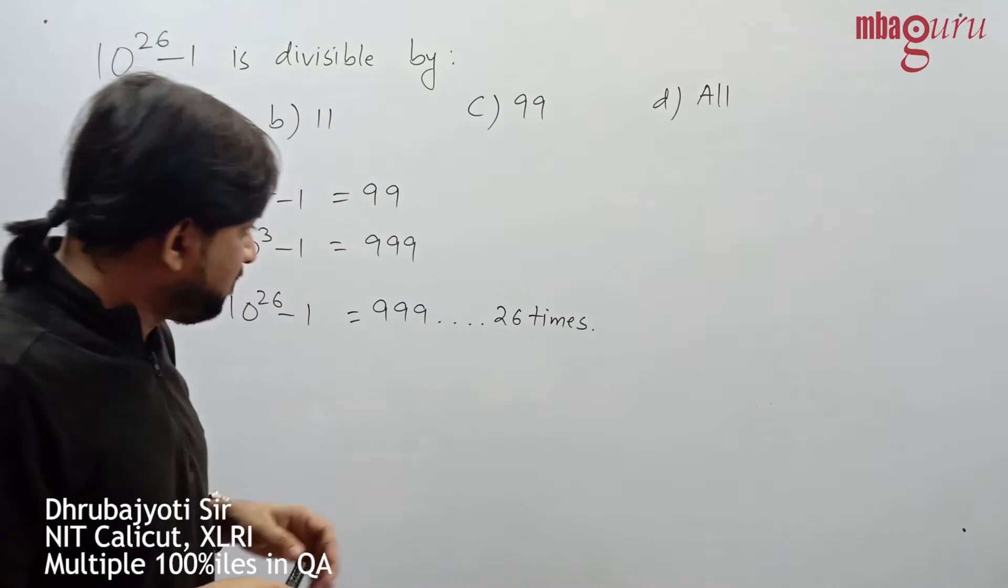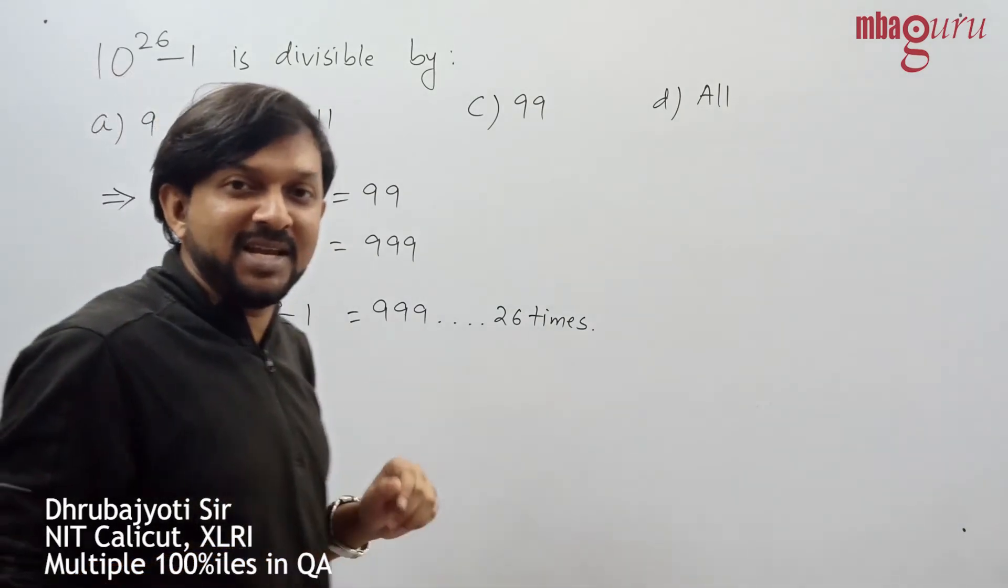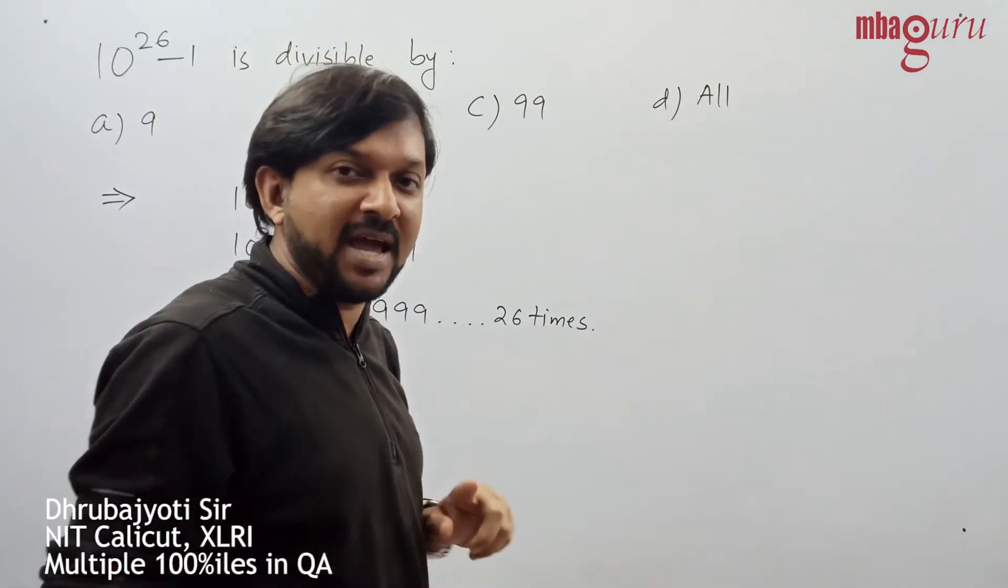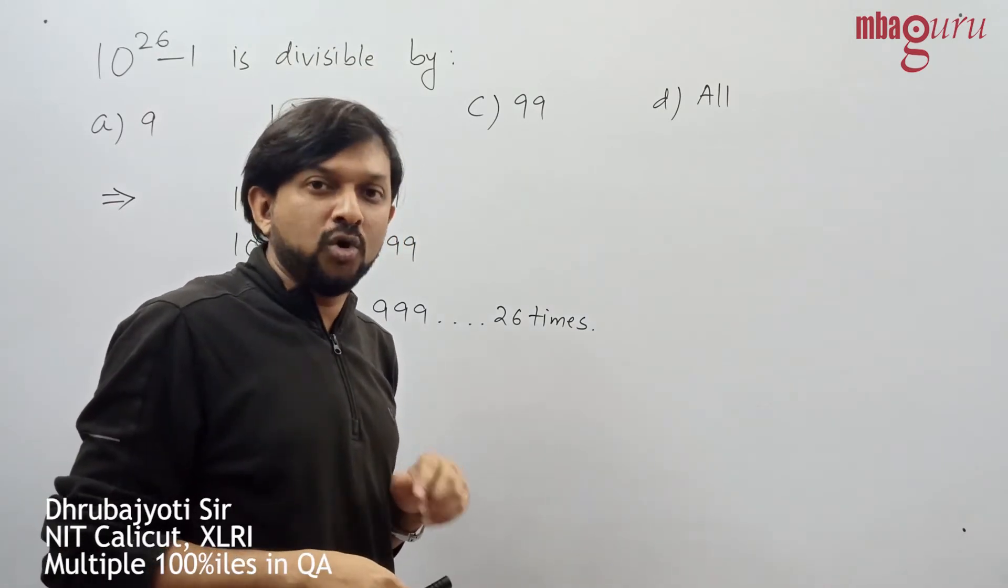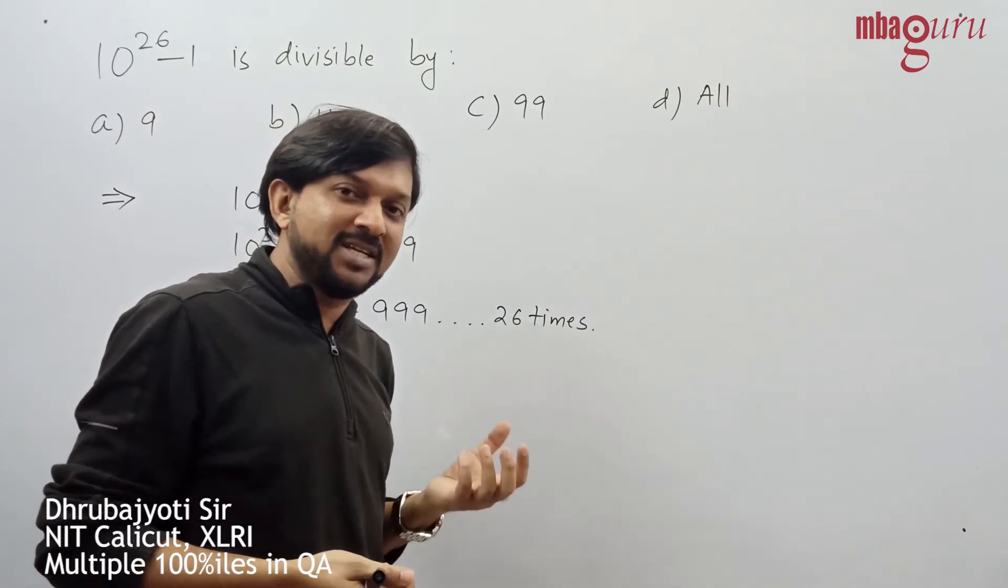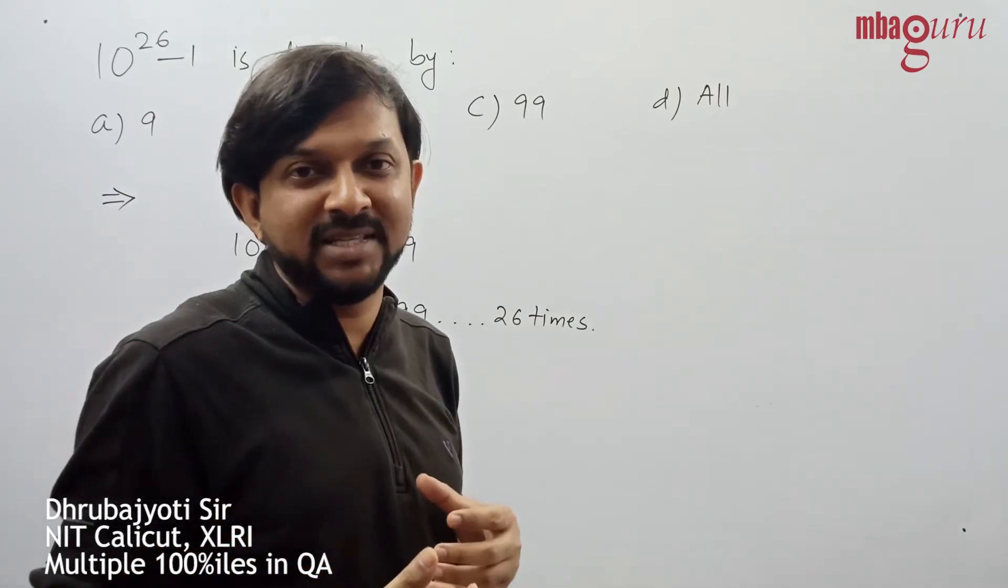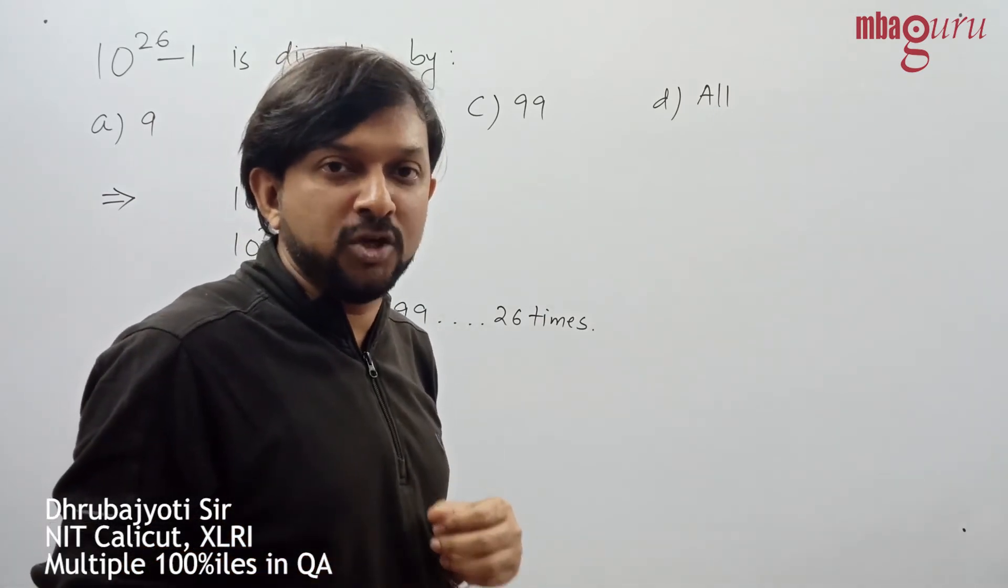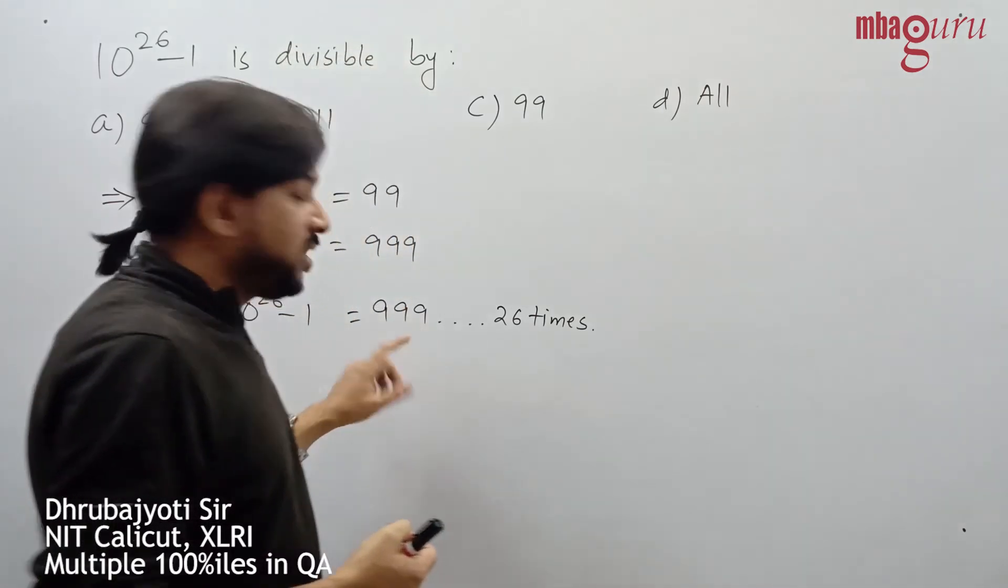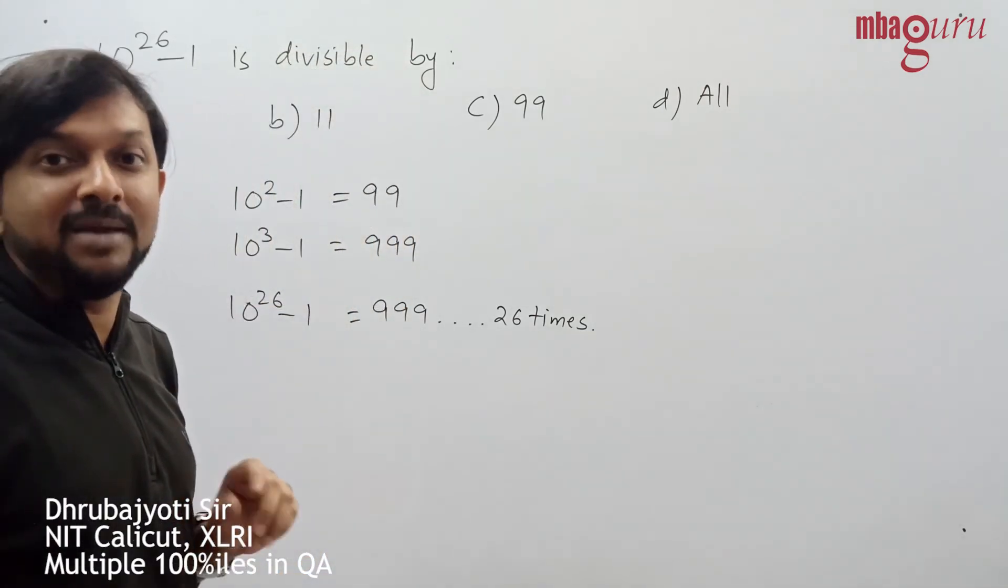Now, in this number there are twenty-six 9s, so there are thirteen 9s in odd places and thirteen 9s in even places. It is obvious that if we add up digits in the odd places, add up digits in the even places, and subtract one from the other, the result is going to equal 0. This means the number is also divisible by 11.